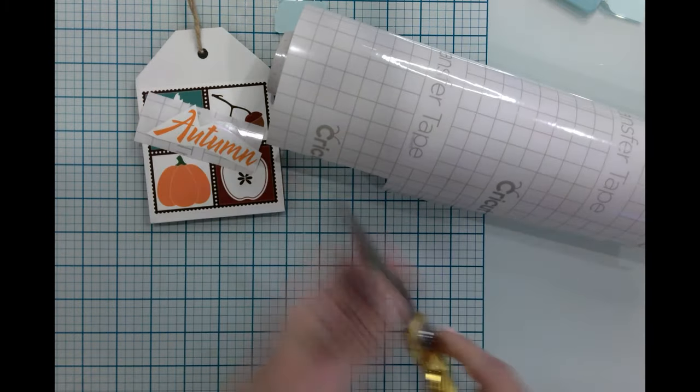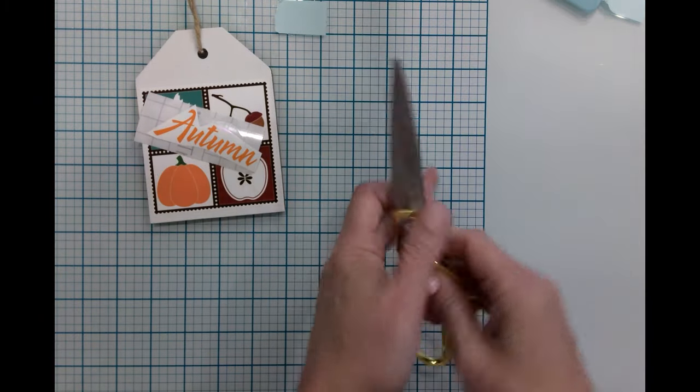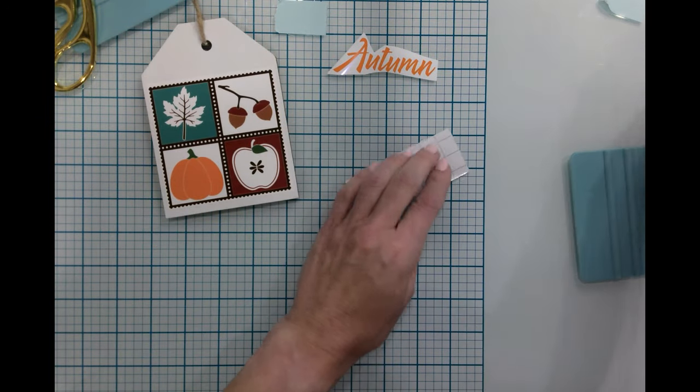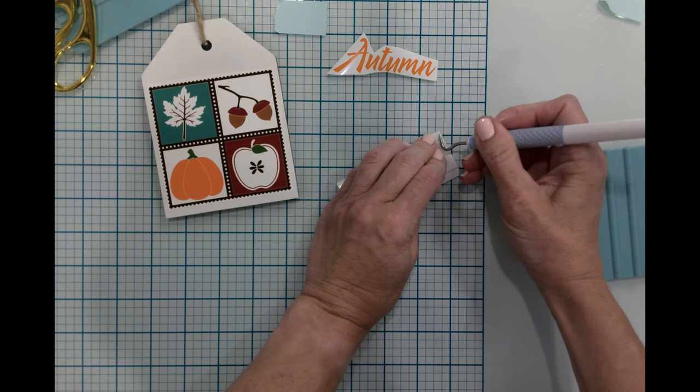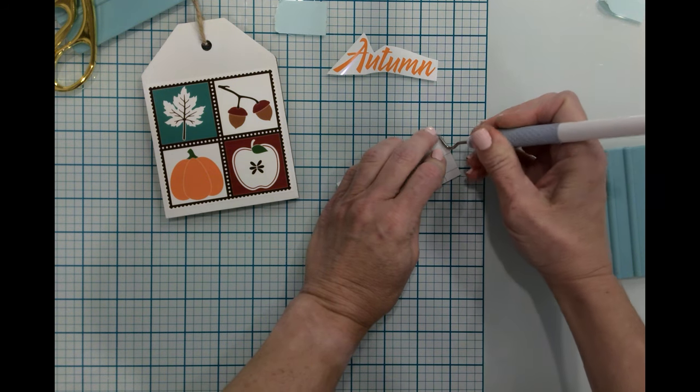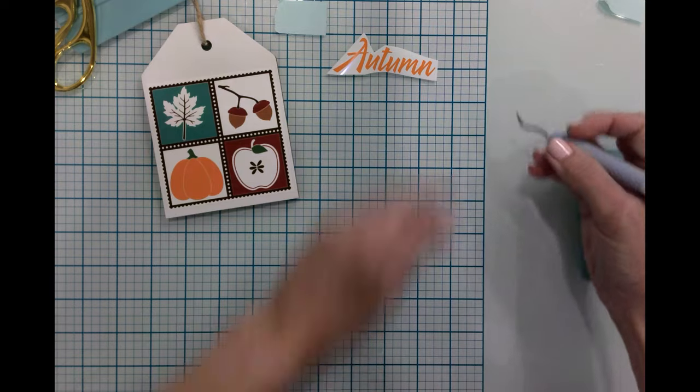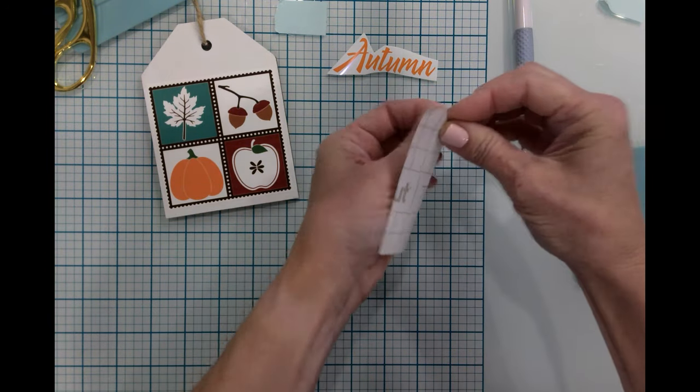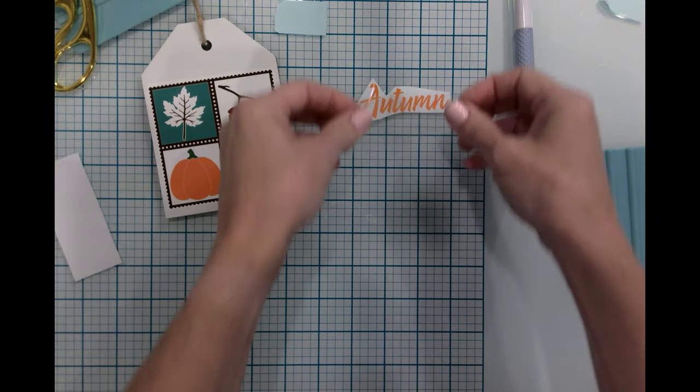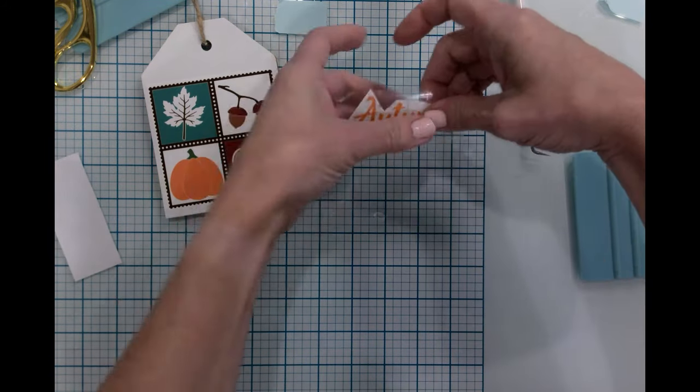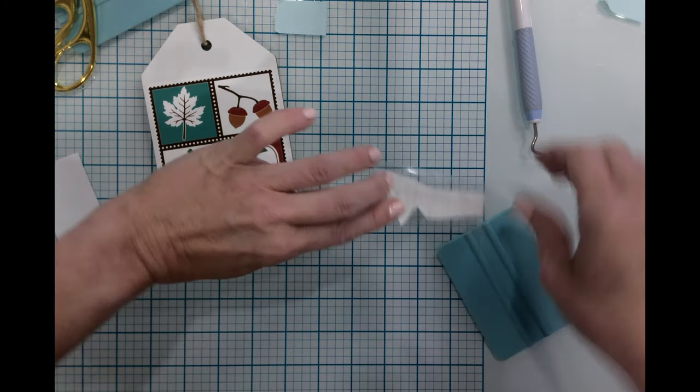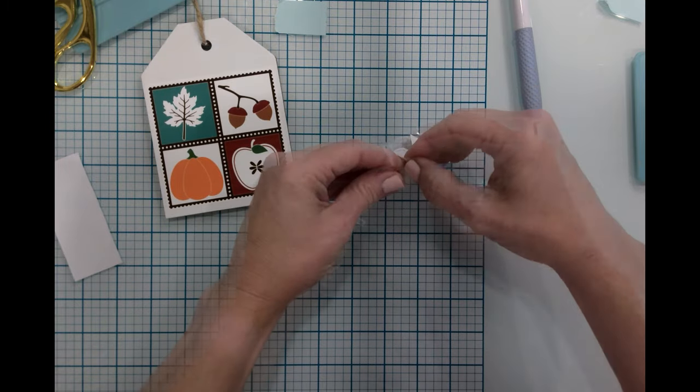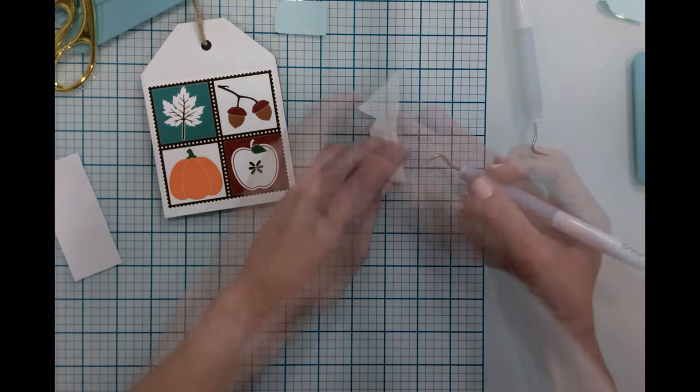I'm going to use my Cricut transfer tape with this particular Cricut brand vinyl, which cuts beautifully on the machine and it weeds really well. I'm just finding that it doesn't really like my other transfer tapes, so I'm going to be using Cricut transfer tape and save my other transfer tape for other brands. The Cricut transfer tape works for most brands, at least in my experience.